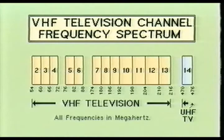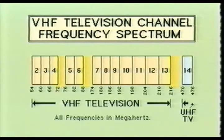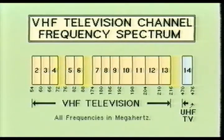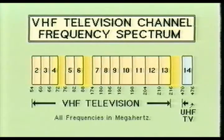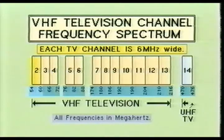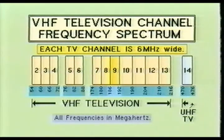You should notice a few things about this frequency spectrum. First, there are gaps between channels 4 and 5, 6 and 7, and a large gap between channel 13 — which is the last VHF channel — and channel 14, which is the beginning of the UHF band. A portion of the gap between channels 6 and 7 is used for the broadcast of FM radio stations. As you may recall from the You Can Do FM radio videos, the FM radio bandwidth occupies all the frequencies between 88 MHz to 108 MHz.